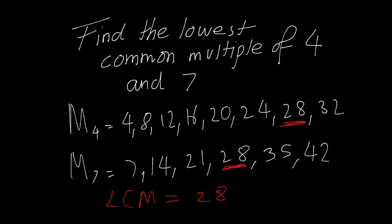Find the lowest common multiple of 4 and 7. We go back to our first rule of multiples — we start off with the first number: 4 times 1, 4 times 2, times 3, and so on. I've listed the multiples of 4 here. For multiples of 7, we start with 7 times 1, times 2, times 3, and so on. As the question is asking for the lowest common multiple, we need to find the number common to both lists — and it's got to be the first, so the lowest one. In this case it would be 28. The lowest common multiple of 4 and 7 is 28.